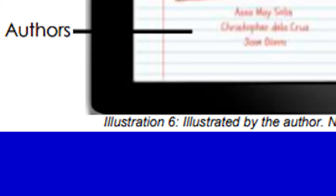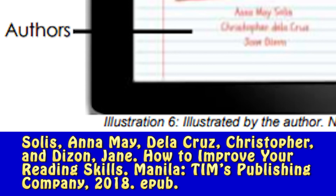The year of publication is 2018, and then you add the format — for example, ePub — and the URL at the end. The authors are: Solis, Anna May; De La Cruz, Christopher; and Dizon, Jane. Notice that the last name always comes first, followed by the first name. Copyright year 2018, followed by ePub.